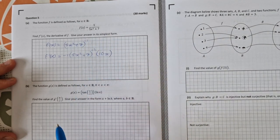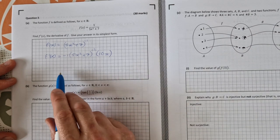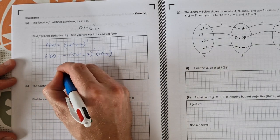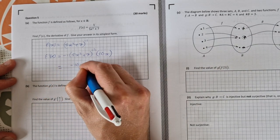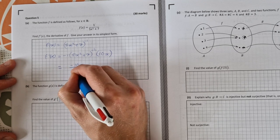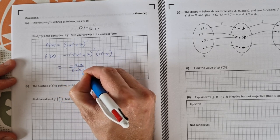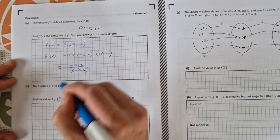It asks you to give your answer in its simplest form, so you are required to simplify that down and that would be minus 10x over 5x squared plus 7 all to the power of 2.